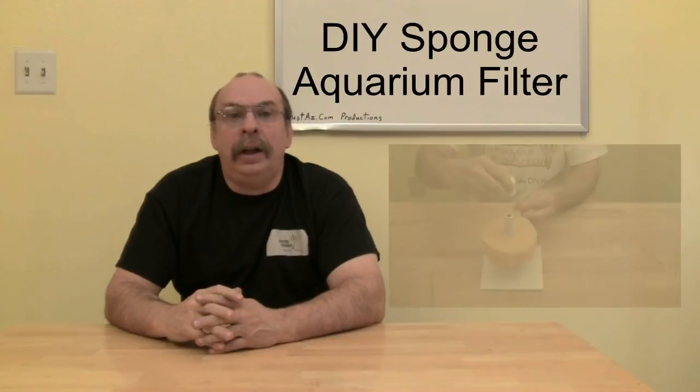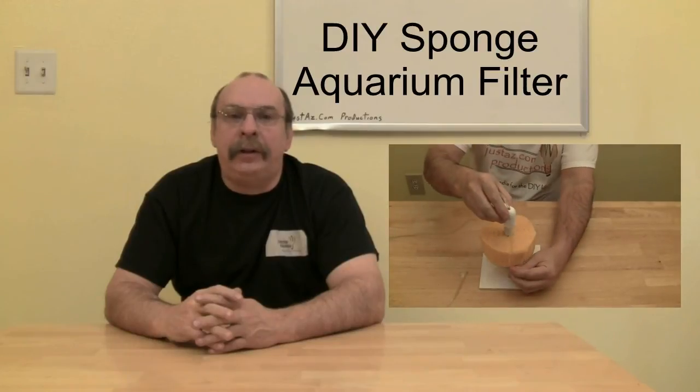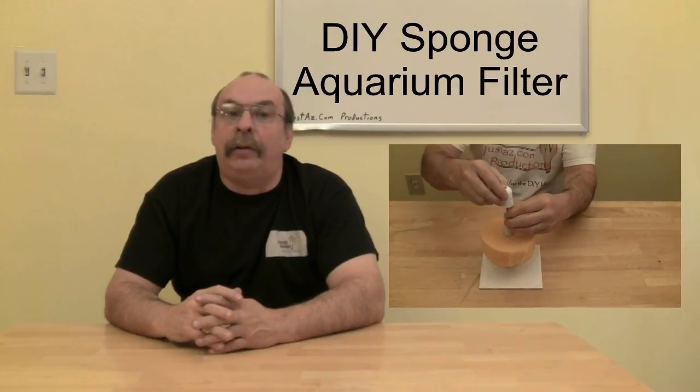Filters can be any one kind such as a biological, or a combination of filters such as you will see in episode 2 DIY sponge aquarium filter. The sponge filter is a combination of biological and mechanical filtration.